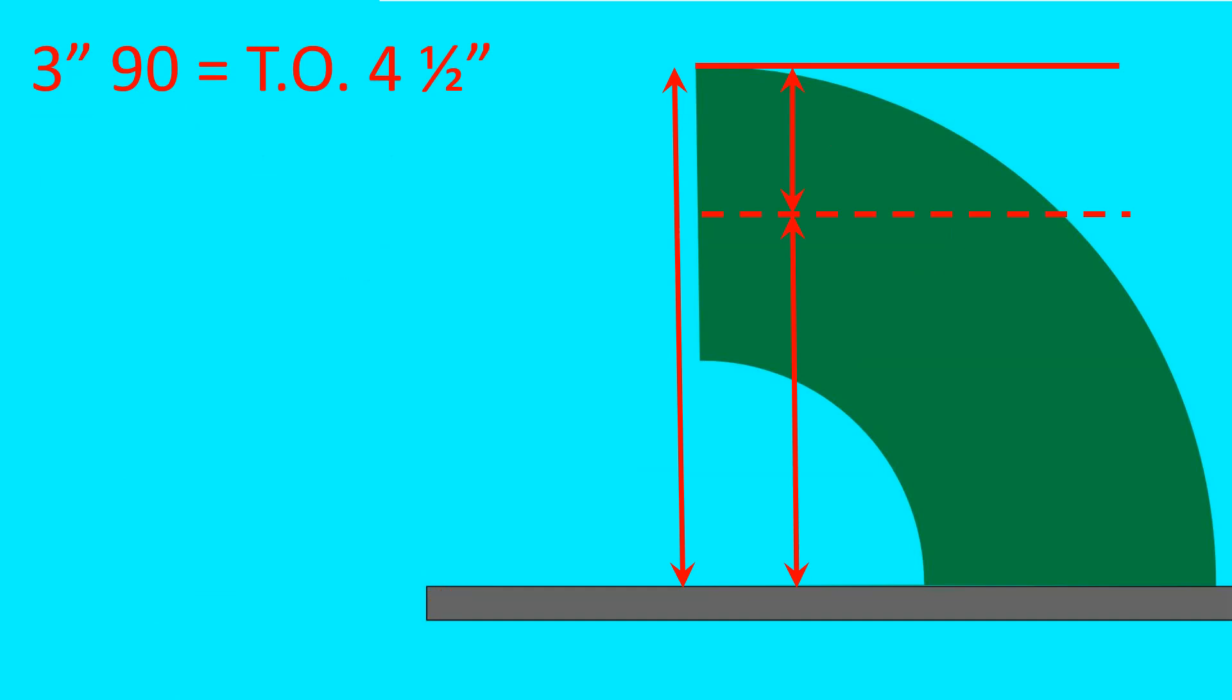A 3 inch 90 takeoff equals four and a half to the center line. A 3 inch pipe OD is three and a half inches. So the height of the elbow would be one takeoff, four and a half inches, plus half the pipe diameter at one and three quarters.